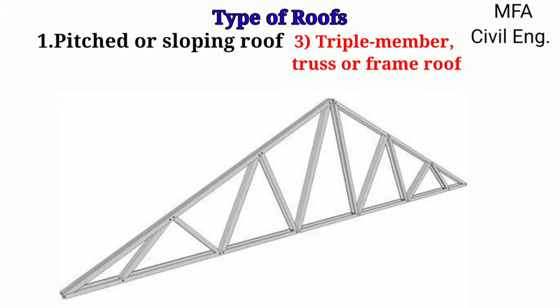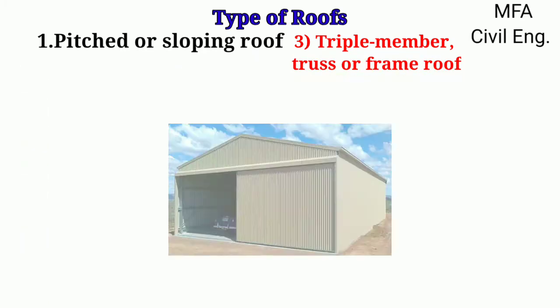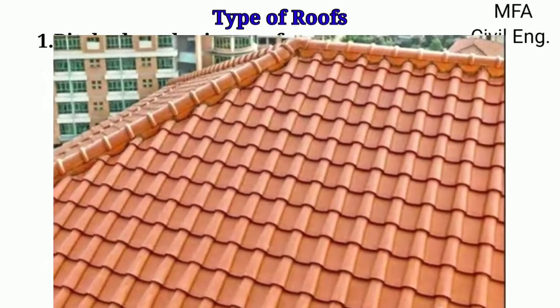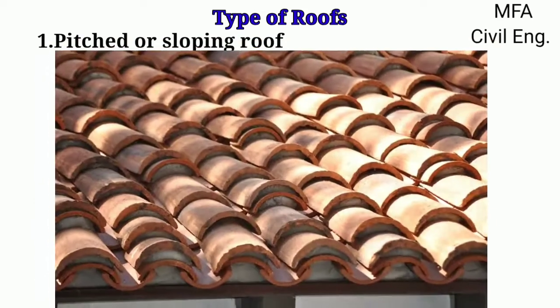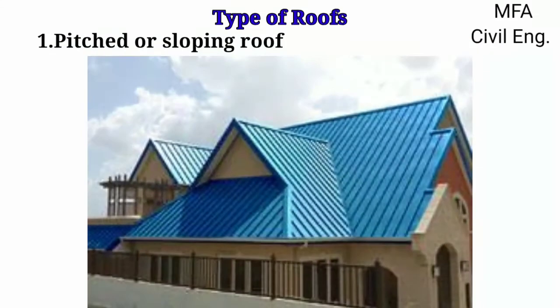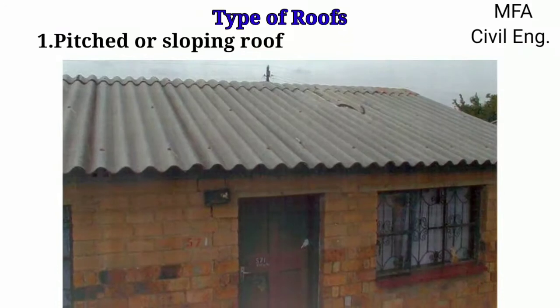Various types of steel roof truss are very common nowadays for warehouses, workshops and auditoriums. Pitched roofs are covered by covering materials like Mangalore pattern tiles, country tiles, galvanized iron sheets and asbestos cement sheets.